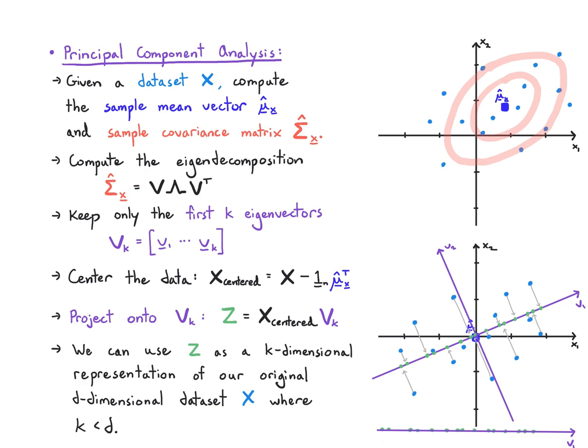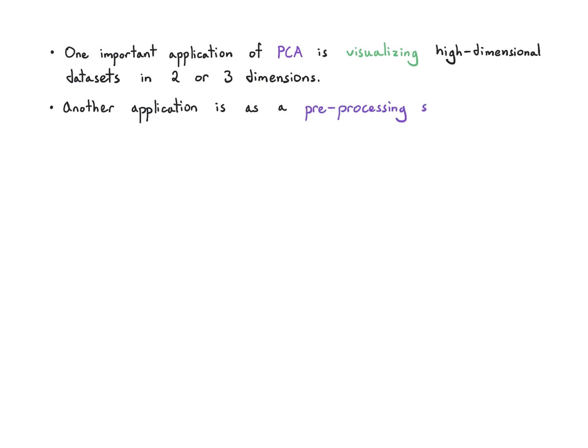This is super important for us if we want to visualize high dimensional data sets. It gives us a way of pushing these high dimensional data sets down to two or three dimensions. Another way that we can use this is as a pre-processing step. If I'm trying to run a machine learning algorithm and I'm worried about overfitting, I can run this as a pre-processing step to pull my data down into a lower dimension.